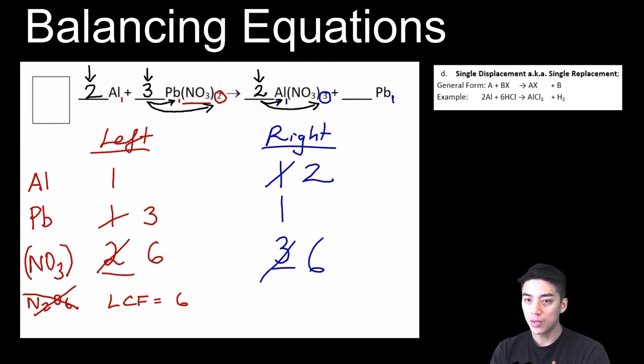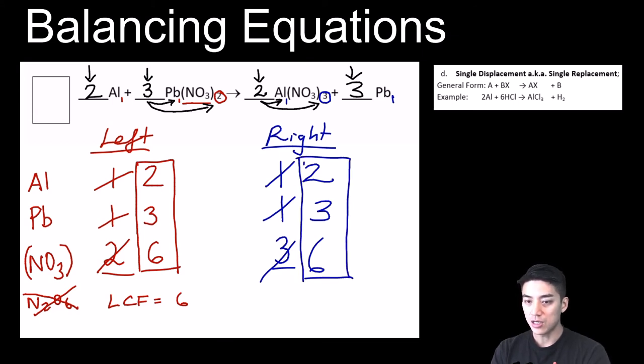So then we just come back here, put a 2 in front of that Al, so aluminums look fine now, they're balanced. Come back to the product side, put a 3 in front, and our leads are balanced. So on both sides of the equation, we have equal numbers of aluminum, lead, and nitrate. And nitrate again is NO3, so it's got nitrogen and oxygen. So I'm going to go ahead and clean all this up right here, so you can see the coefficients nice and neat again. We've got a 2, 3, 2, and a 3, making a sum of 10 for the sum of coefficients.